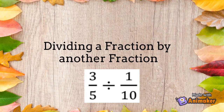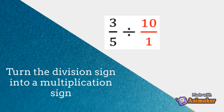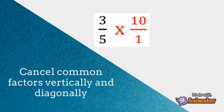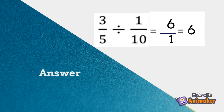Dividing a fraction by another fraction. Find the reciprocal of the divisor. Turn the division sign into a multiplication sign. Cancel common factors vertically and diagonally. Multiply both numerators and both denominators. 3 fifths divided by 1 tenth equals 6.